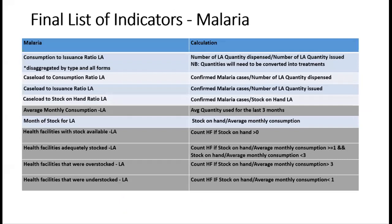For the indicators, I'll focus on the malaria program. We developed indicators for malaria, TB, HIV, and the reproductive health department, but for this demonstration I'll focus on the malaria indicators. On this slide, indicators highlighted in gray are those created using predictors, while the other indicators are configured using the DHIS2 indicator app.